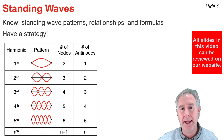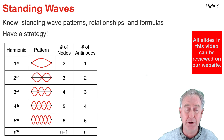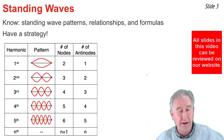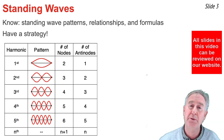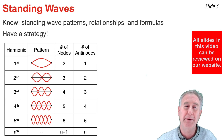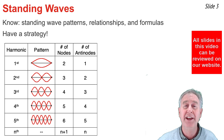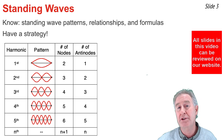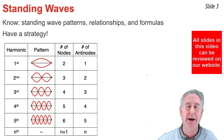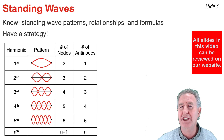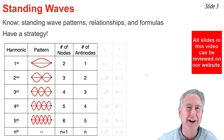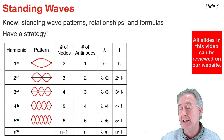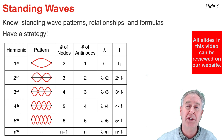One thing you'll note in the patterns is that the number of antinodes vibrating up and down between the extremes is equal to the harmonic number. For the first harmonic there's one antinode; for the third harmonic there are three antinodes; for the nth harmonic there are n antinodes. The number of nodes is simply the number of antinodes plus one. The wavelength and frequency relationships between harmonics are also identified in these columns.